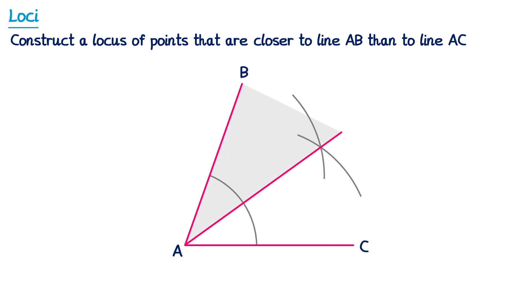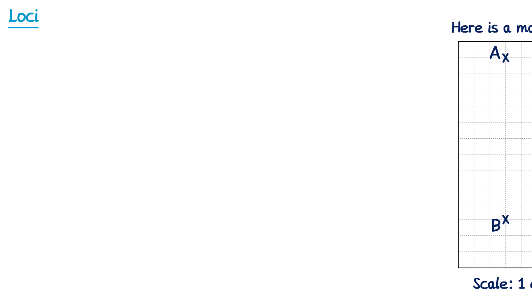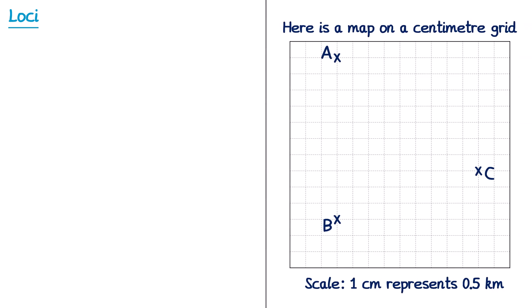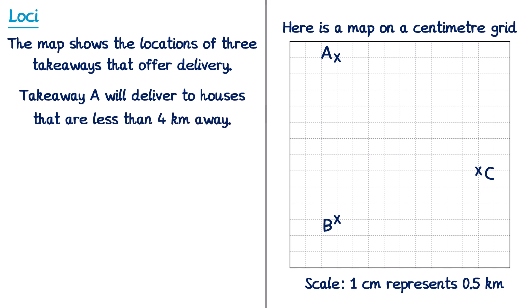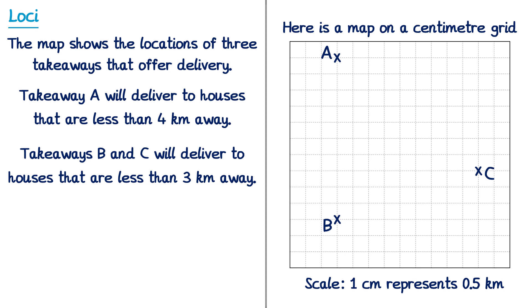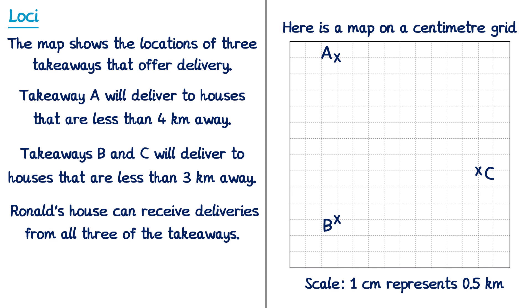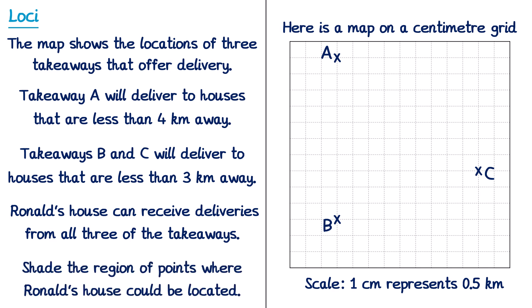We've covered lots of different loci, and sometimes they're asked in context. For example: a map shows three takeaways that offer delivery. Takeaway A delivers to houses less than 4km away; takeaways B and C deliver to houses less than 3km away. Ronald's house can receive deliveries from all three takeaways — shade the region where Ronald's house could be.